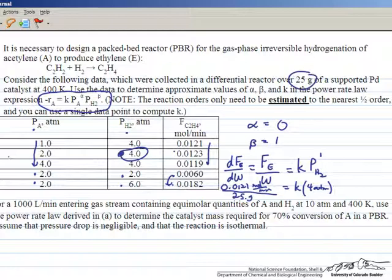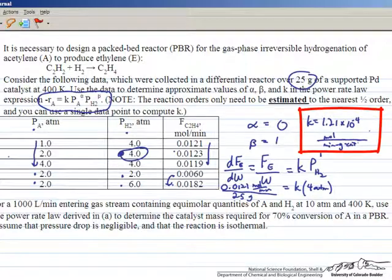We can solve for K equals 1.21 times 10^-4 in units of moles per minute gram catalyst per atmosphere. Now we're going to use this information in part B to size the reactor with our necessary kinetic expressions.